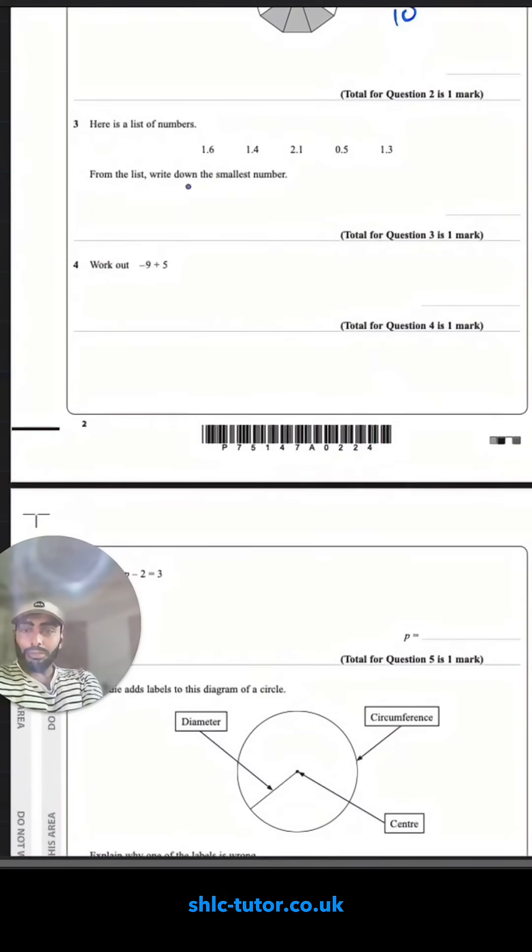Here is a list of numbers. From the list, write down the smallest number. Well, we'll start with a two. That's a one. That's going to be the smallest number.